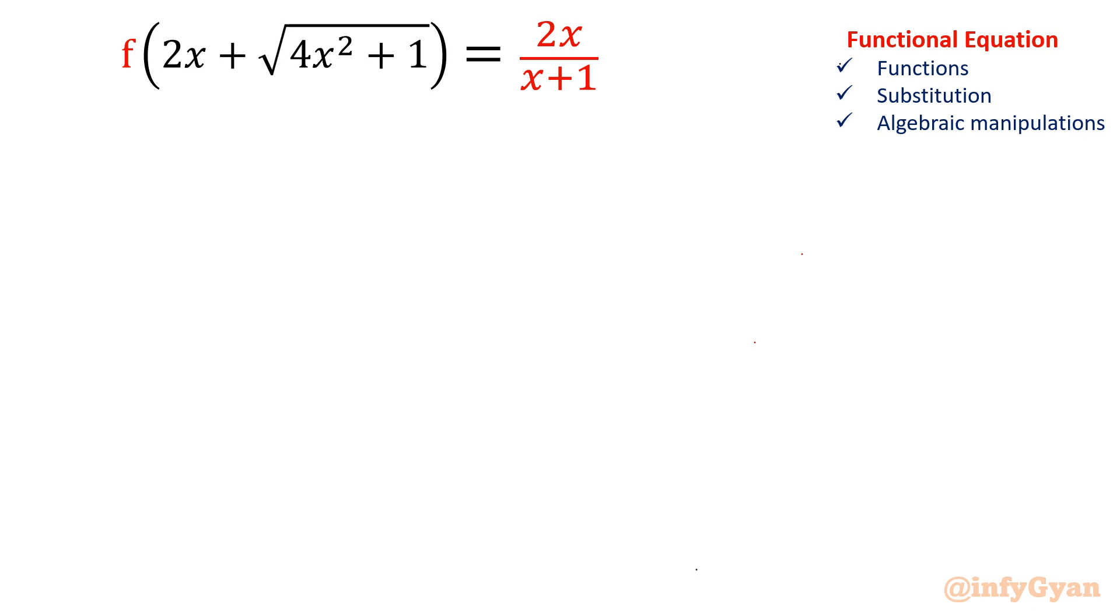I am going to substitute the bracket equal to t. So I will write 2x plus square root 4x square plus 1 equal to t. Take away 2x to both sides.